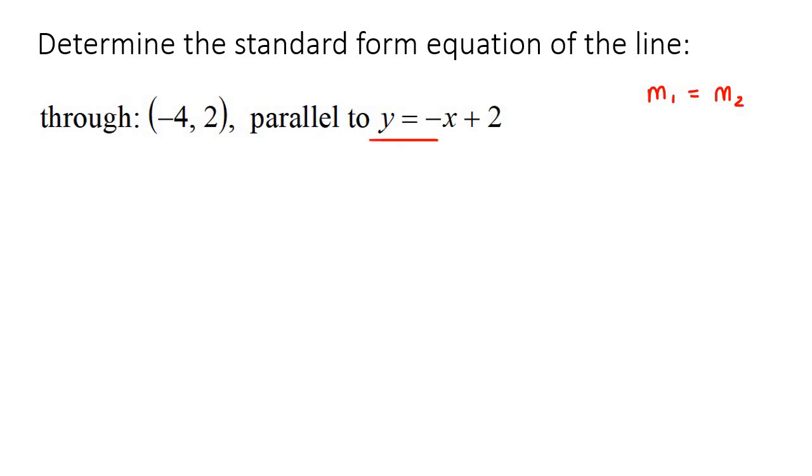So this line over here is already written in slope-intercept form. So we know that when it's written in slope-intercept form, which is y equals mx plus b or plus c, then we know that this is the slope.